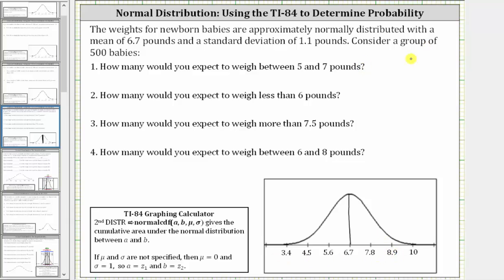We're asked to consider a group of 500 babies. Number one: how many would you expect to weigh between 5 and 7 pounds? We'll first find the probability the weight is between 5 and 7 pounds, and then we'll determine how many of the 500 babies would weigh between 5 and 7 pounds.